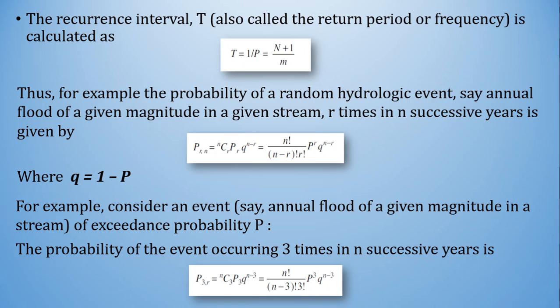In the binomial probability formula, r is the number of occurrences and q — the probability of non-occurrence — is equal to 1 minus P, where P is the probability of occurrence of the event.